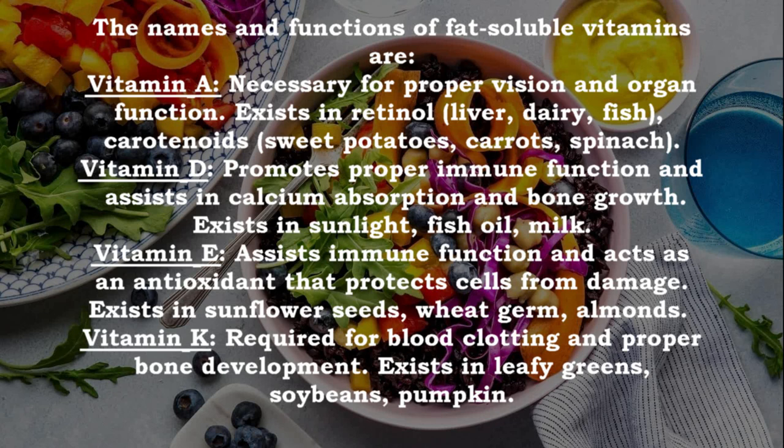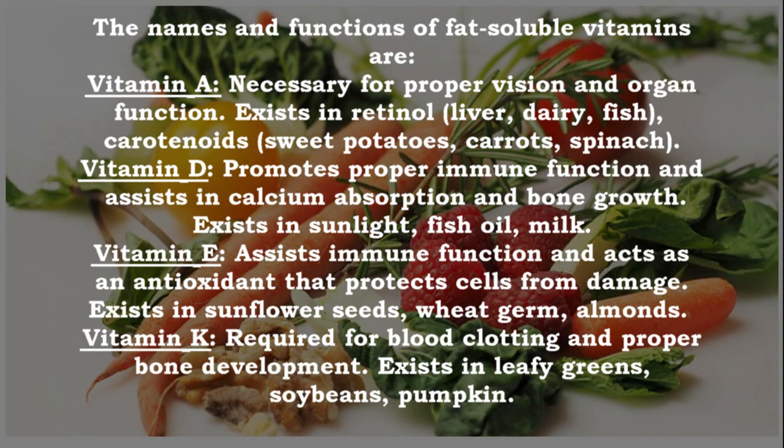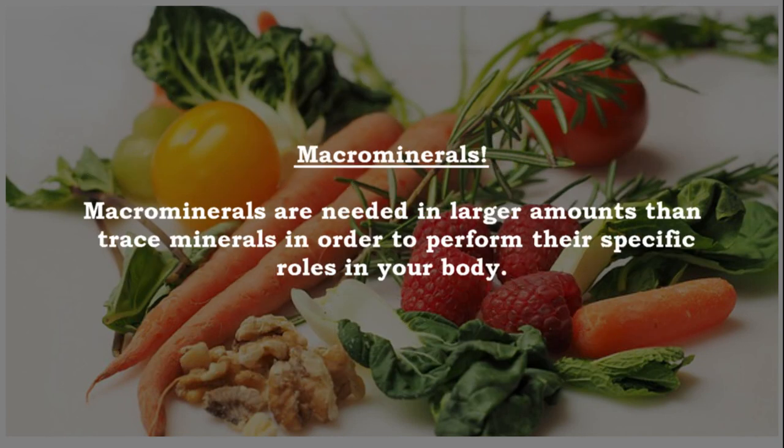Vitamin D — promotes proper immune function and assists in calcium absorption and bone growth; found in sunlight, fish oil, and milk. Vitamin E — assists immune function and acts as an antioxidant that protects cells from damage; found in sunflower seeds, wheat germ, and almonds. Vitamin K — required for blood clotting and proper bone development; found in leafy greens, soybeans, and pumpkin.